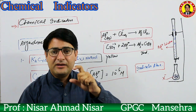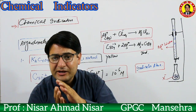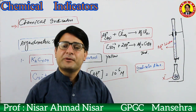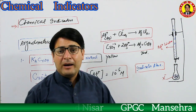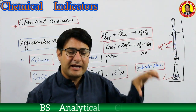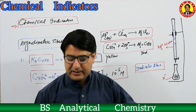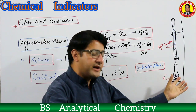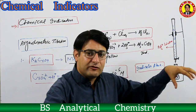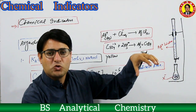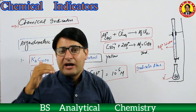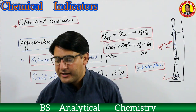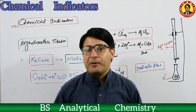We note the volume of silver ions required to cause a color change in distilled water containing the indicator. That volume is called the indicator blank. From the total volume of silver ions used up to the end point, we subtract the indicator blank — the volume consumed by the indicator itself — to get the actual volume of silver ions that reacted with halide ions. This makes our calculation more accurate.